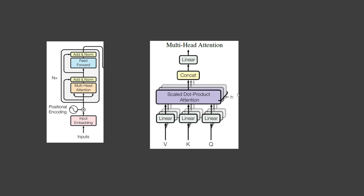Each multi-head attention block is made up of four layers. In this diagram, there are three linear or dense layers, each receiving the values, keys, and queries, plus a scaled dot-product attention function. The operations performed in these layers are repeated and performed in parallel. On the third layer, a concatenation operation joins the outputs from different heads. Finally, a linear layer produces the output.